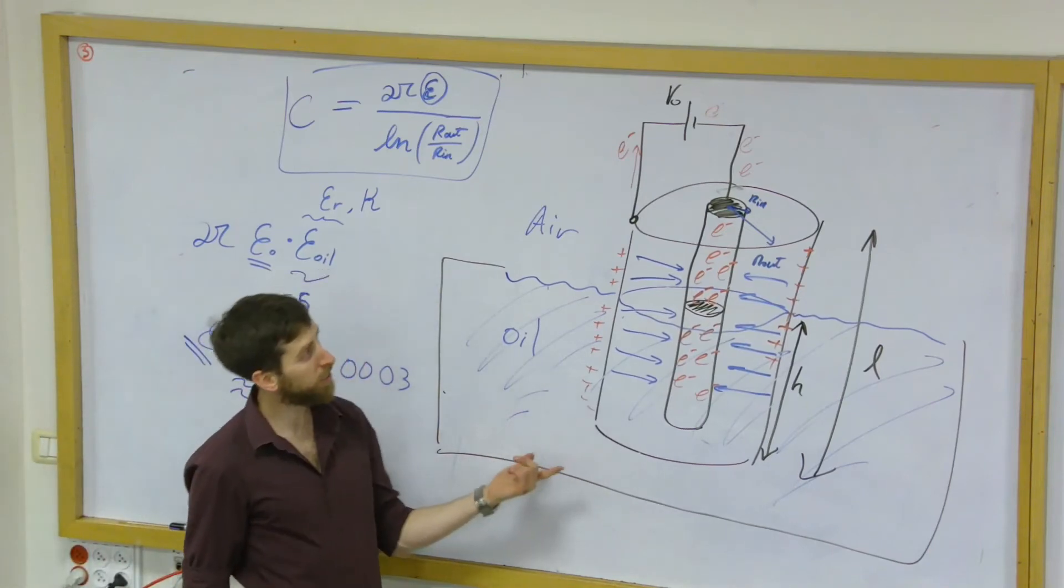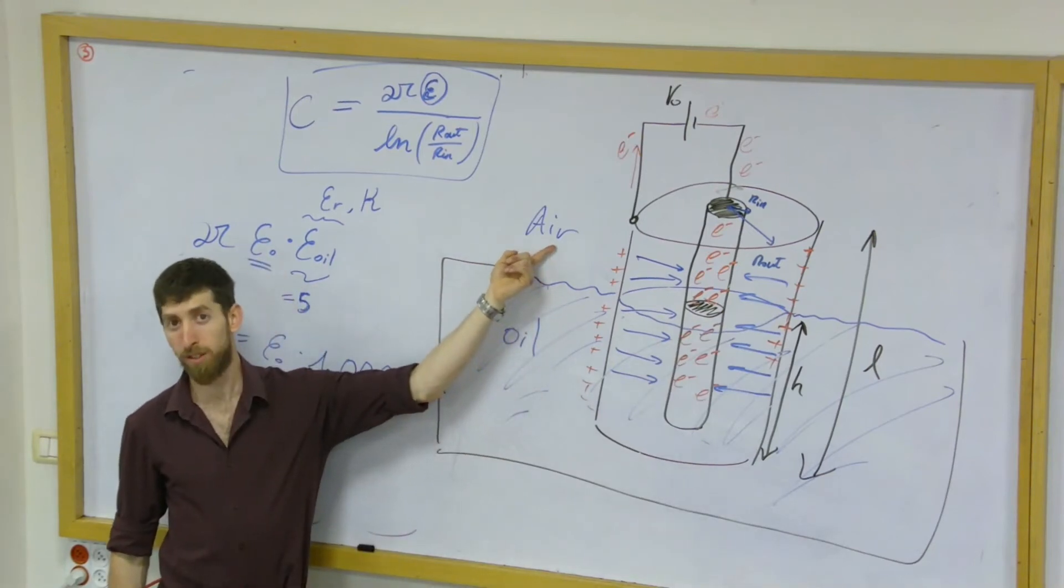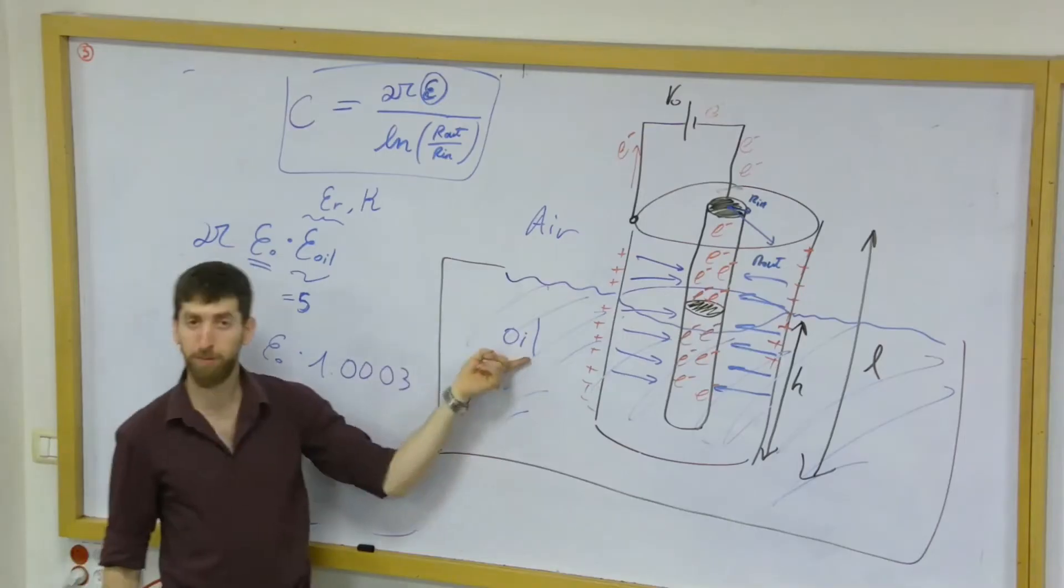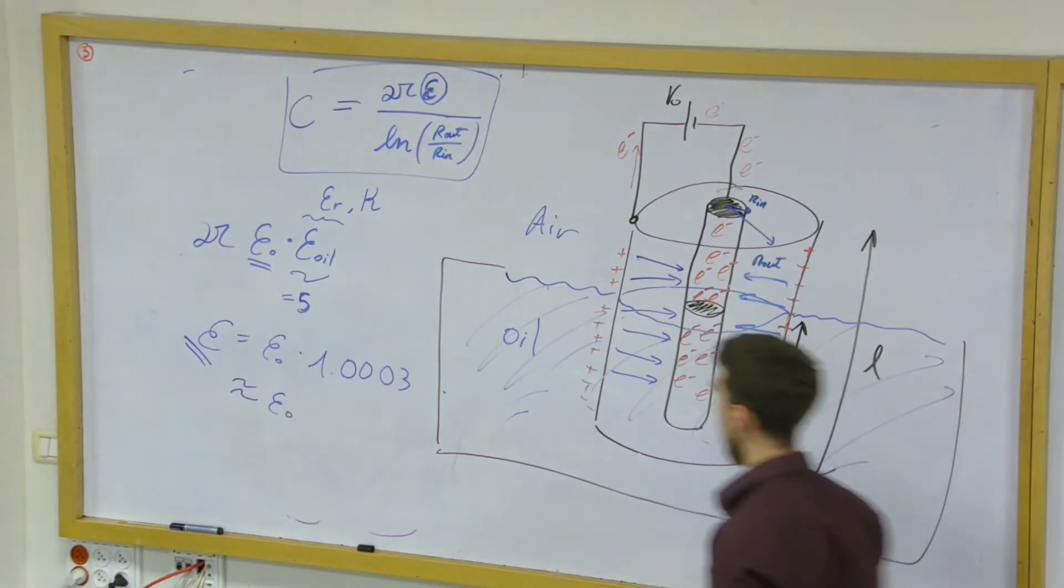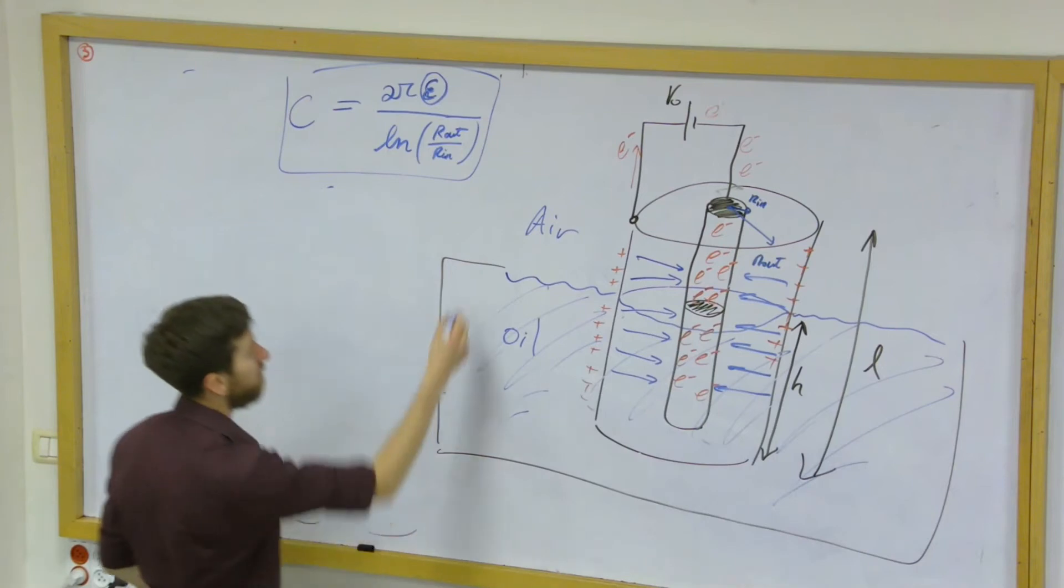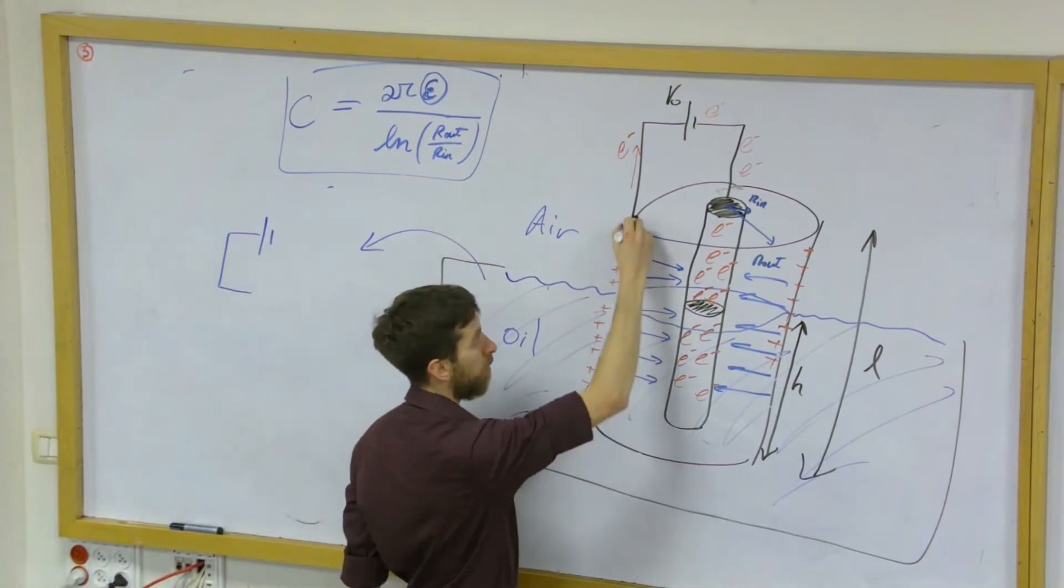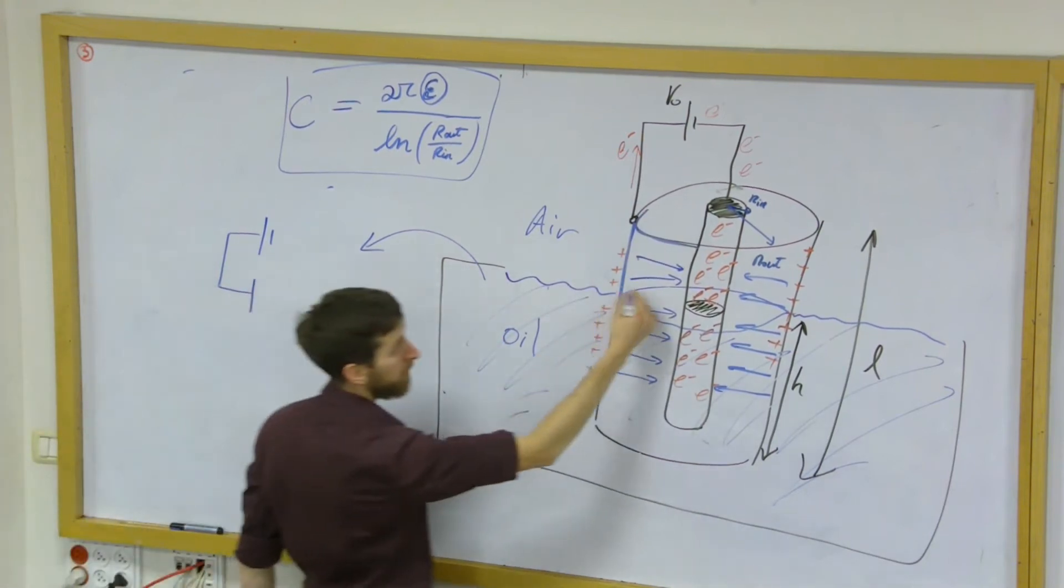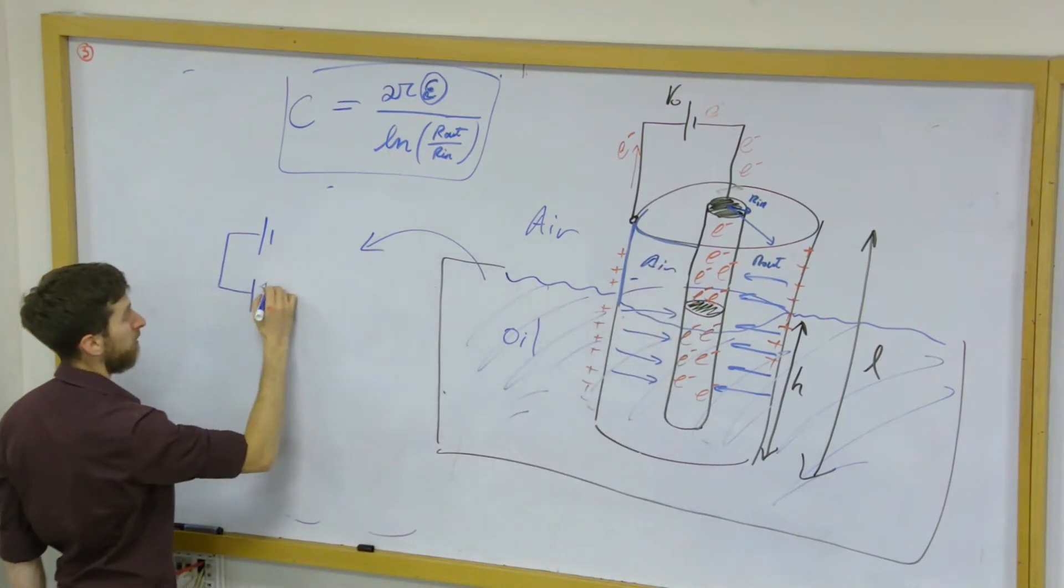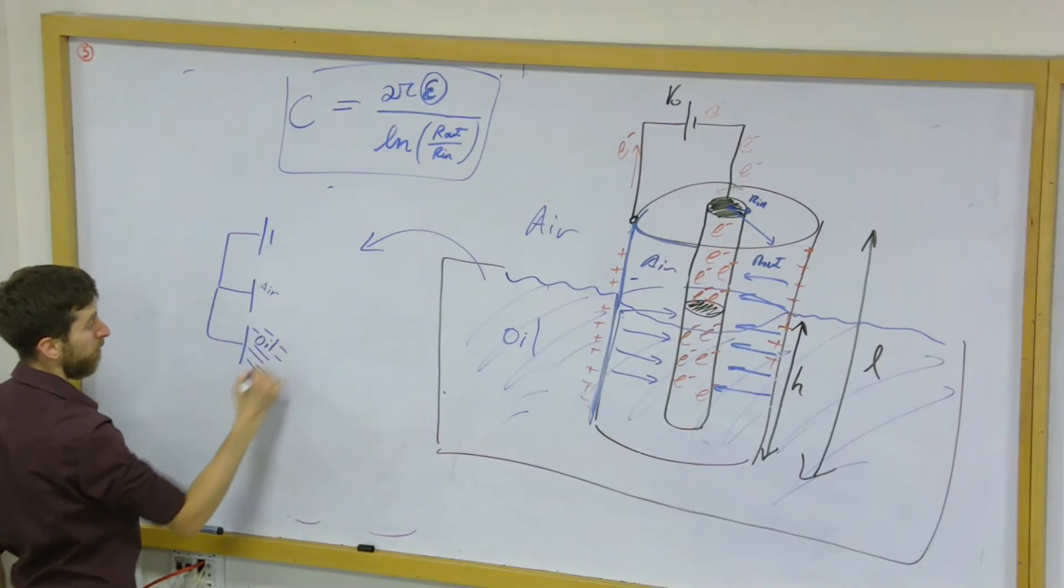But look what we have in our system. In our system, we actually have two different materials. You see it? On top, we have just the air. And down below, we have the oil. So let's understand what kind of a capacitor we actually have here. Because if we have two different materials, we actually have two different capacitors. So I would try to draw this as a circuit. So this is the battery. And then the battery is connected to capacitors, this outer shell. So I'm going to draw a capacitor with air. And down below, if I continue this conductor, I have the oil.